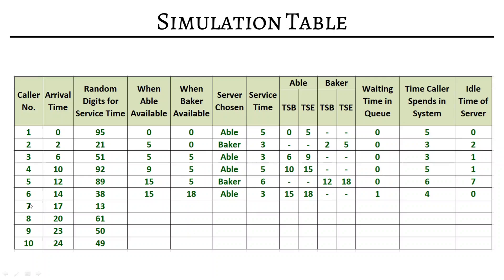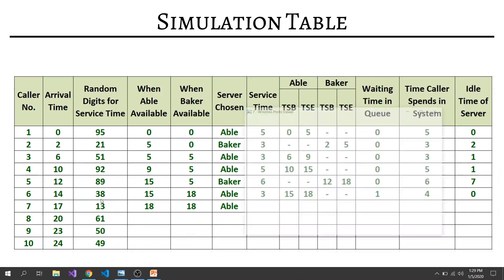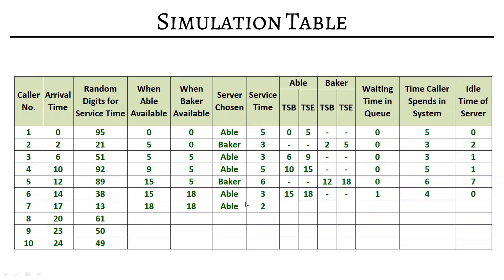The seventh caller arrives at time 17. Abel is available at 18 and Baker is also available at 18 — both will be ready at 18, so we prefer Abel. Random digit 13 gives service time 2. Service begins at 18 and ends at 20. Waiting time is 1 minute (arrived at 17, served at 18). Time in system is 3 minutes (2 service + 1 wait). Abel idle time is 0.